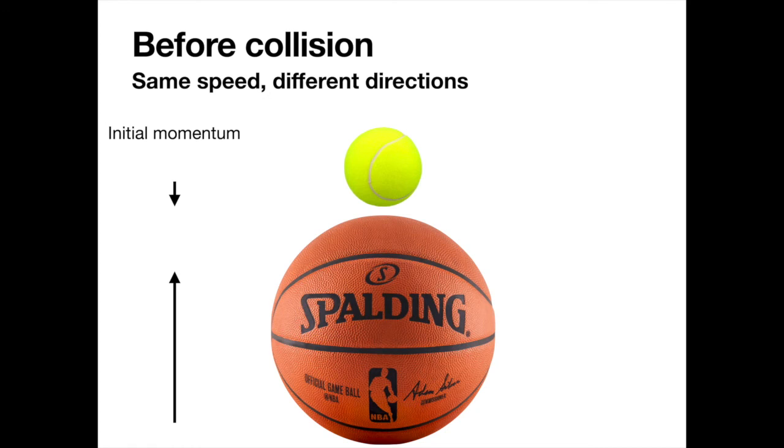If the basketball and the tennis ball are dropped at the same height and the basketball has already bounced back up off the ground, then they're moving at the same speed, but in different directions. However, the momentum doesn't have the same magnitude because the tennis ball is much less massive. So if we look at the initial momentum, the basketball has a large amount of momentum pointing up, the tennis ball has a small amount of momentum pointing down.